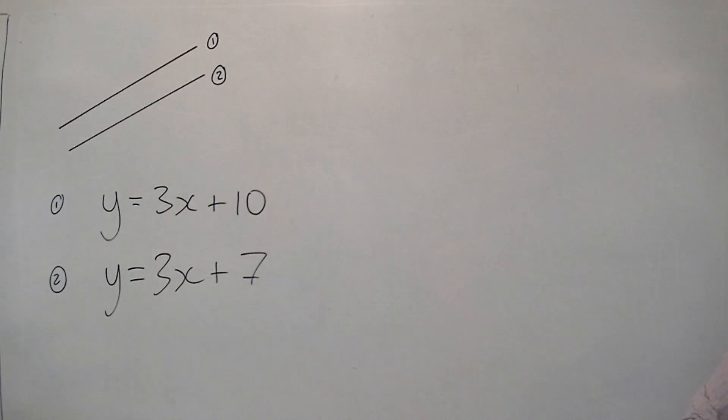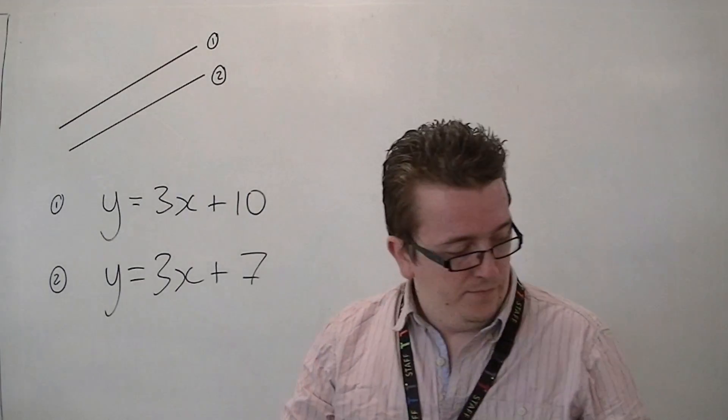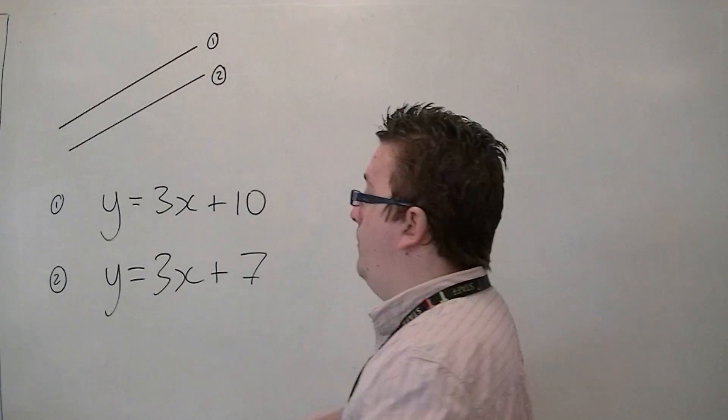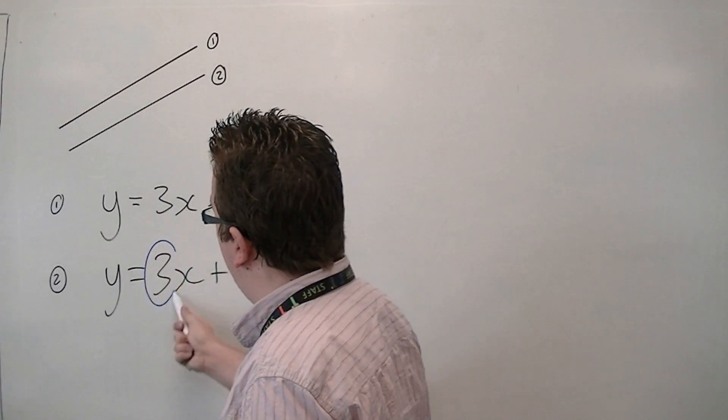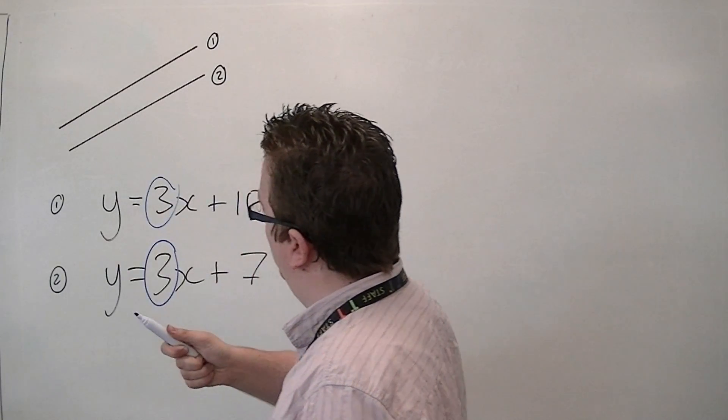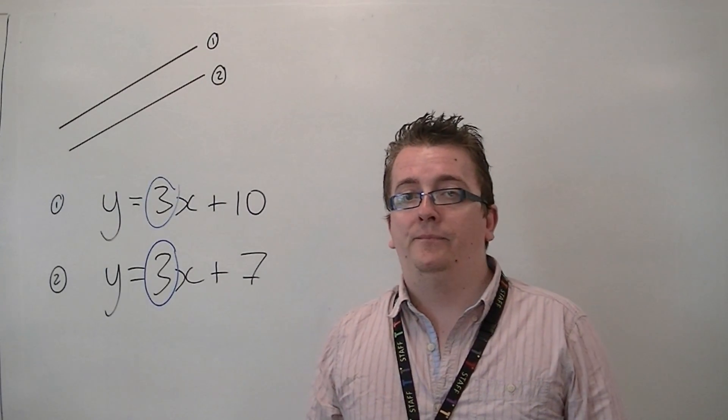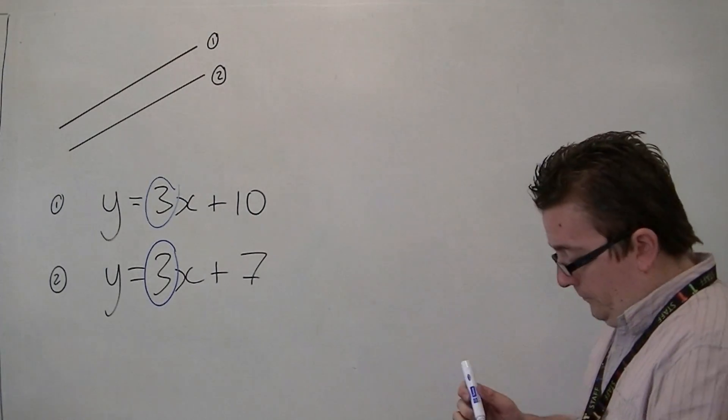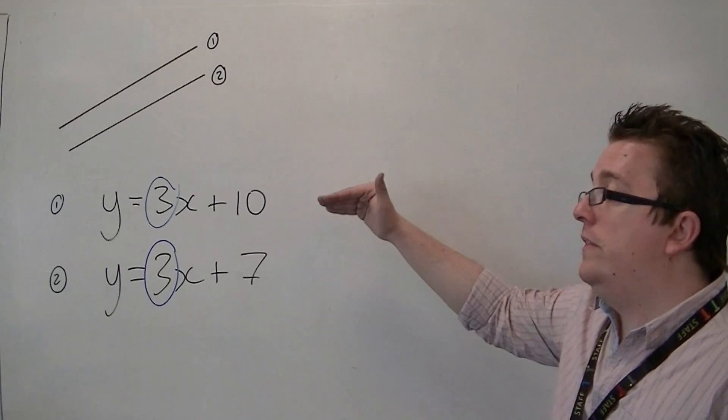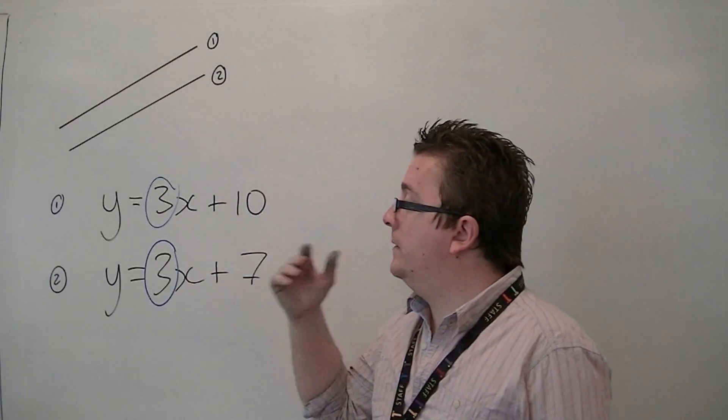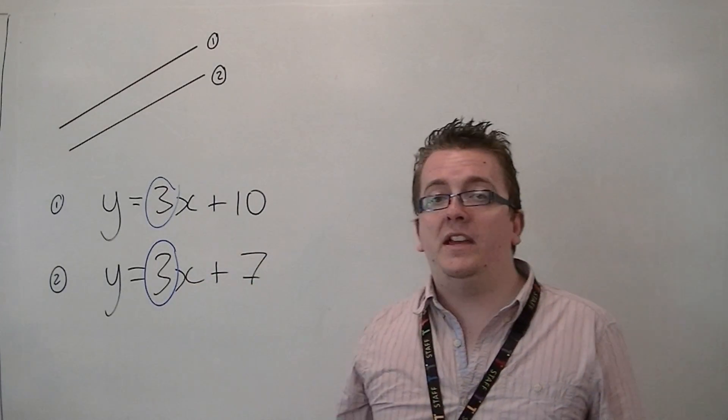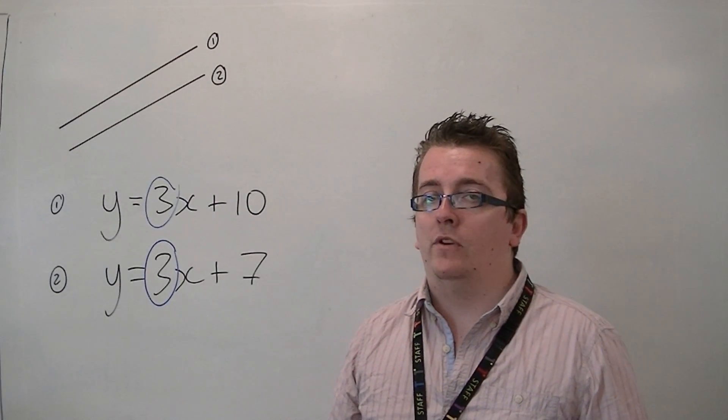So, they both have the same gradient, which is given, remember, by the number in front of the x, the coefficient of x. And it's just that the y-intercept is a different number. So, if you come across two equations that are written in this format, where the gradient is the same, then those two lines must, therefore, be parallel.